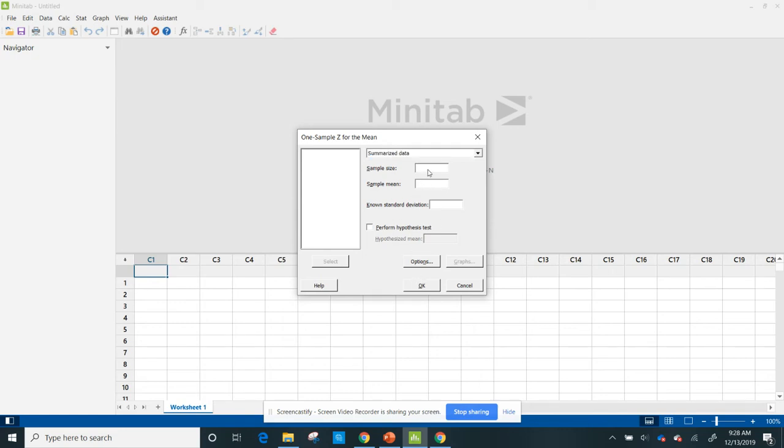My sample size was 36, my sample mean was 69, and my known standard deviation is 3. This known standard deviation is the same thing as saying the population standard deviation. I'm going to hit options, and I've got a 95% level of confidence.